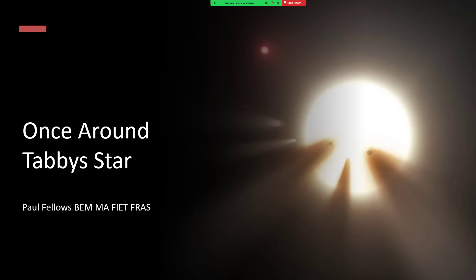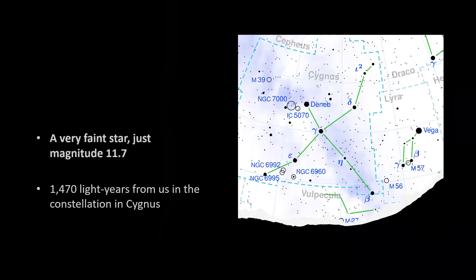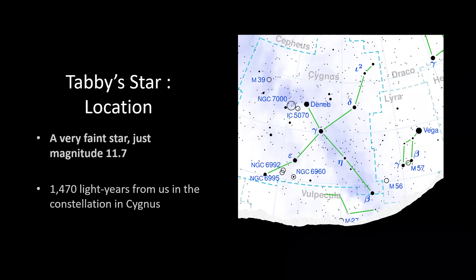Once around Tabby's star, a truly shocking and fascinating discovery when it was first announced. Tabby's star is just off the base of Cygnus near the star Deneb at the tail of the constellation Cygnus the Swan, but it's a very faint star.